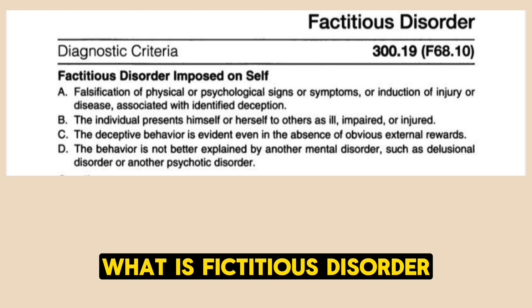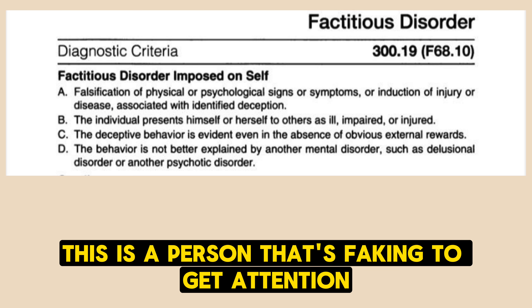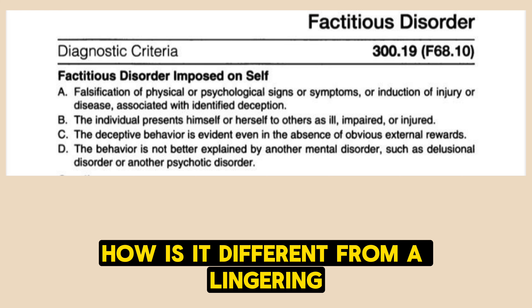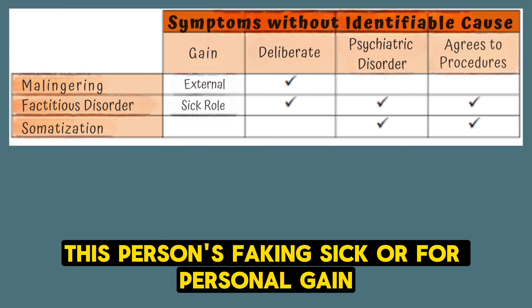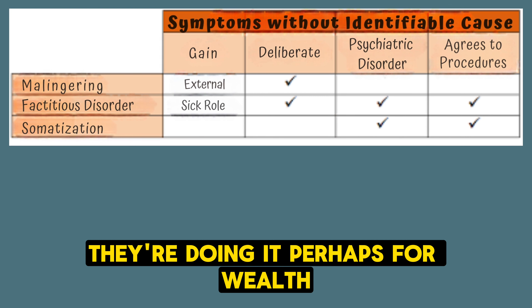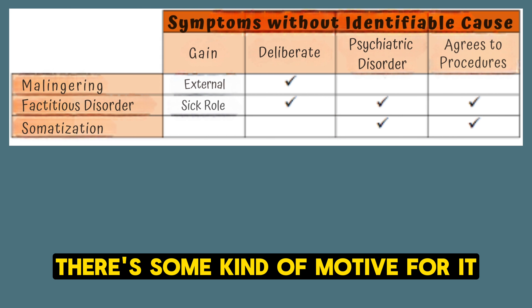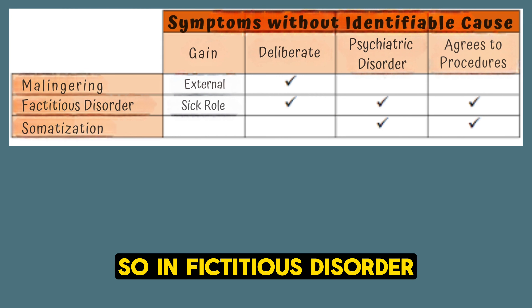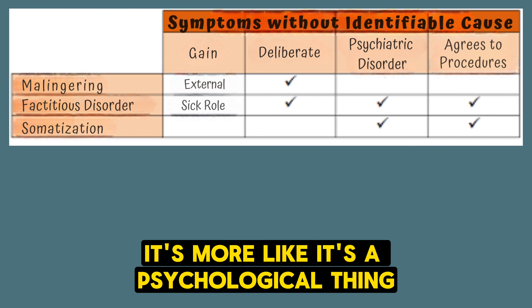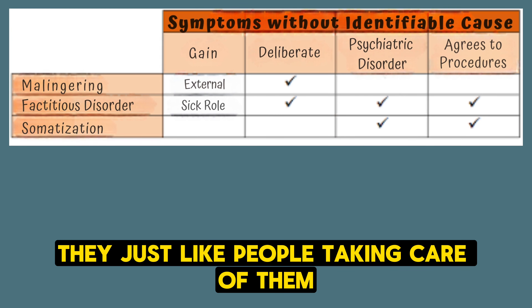What is factitious disorder? A person faking illness to get attention — it's a psychological need for people to take care of them. How is it different from malingering? Malingering is faking sick for personal gain — wealth, time off work, a lawsuit. In factitious disorder, it's psychological.